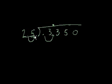So how many times does 25 go into 3? Well, 0. So you can put a 0 here just for fun if you want. How many times does 25 go into 33? Well, it goes into it one time. 1 times 25 is 25. 33 minus 25 is 8.